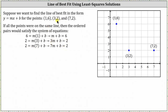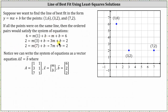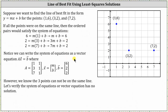If all three points were on the same line, all the ordered pairs would be solutions to this system of equations. Notice how we can write this system as a vector equation, matrix A times vector x equals vector b, where matrix A is the coefficient matrix with rows 1 1, 3 1, and 7 1. Vector x contains entries m and b — the slope and y-intercept — and vector b contains the constants 6, 2, 2.